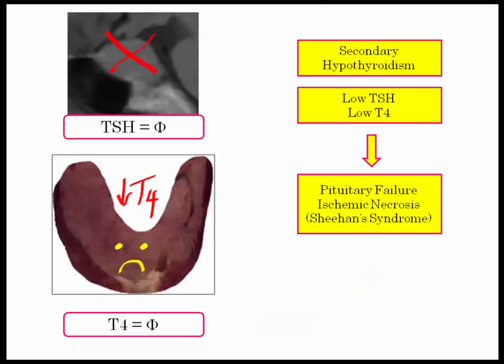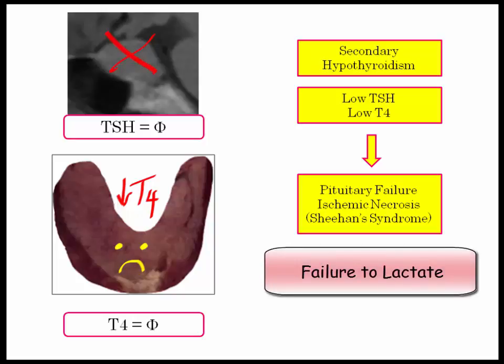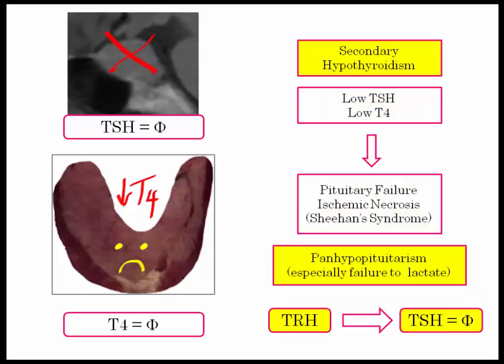A patient may present with secondary hypothyroidism — that is, pituitary failure. They will still have a low free T4, but since the pituitary has failed, the TSH will also be low. The most common scenario is ischemic necrosis, or Sheehan syndrome. Your clue will be failure to lactate in the postpartum state. In these vignettes, T4 will be low, TSH will be low, and there will be no rise in either level following TRH stimulation.